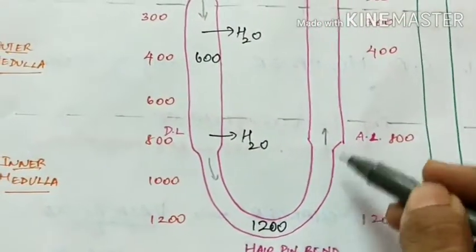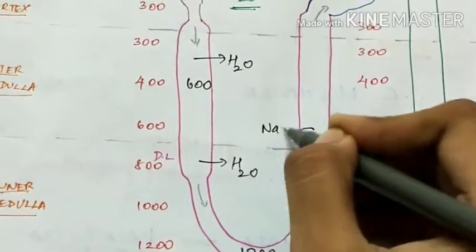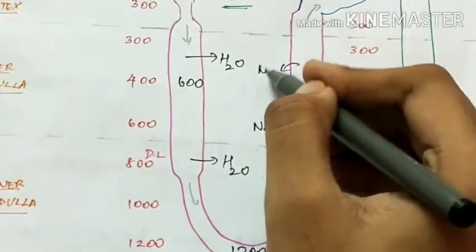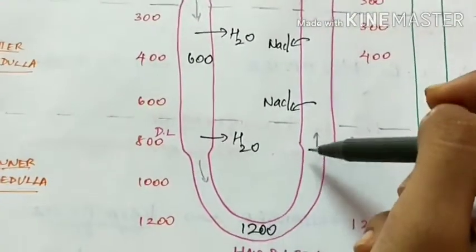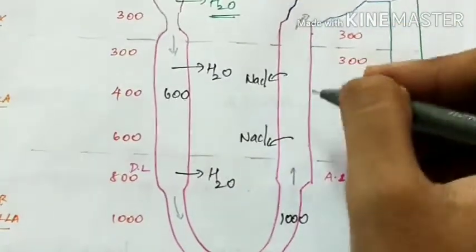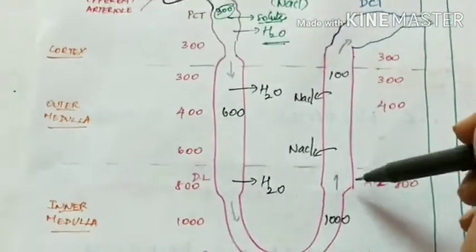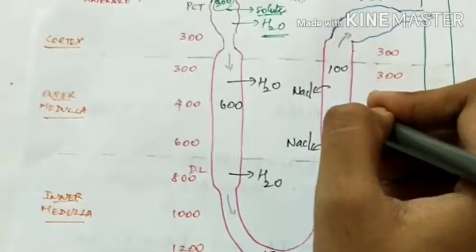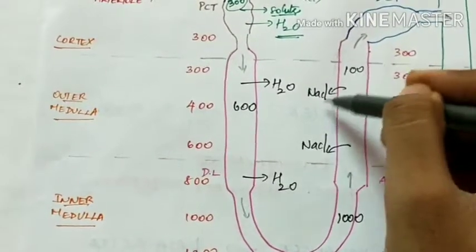In the ascending limb of the loop of Henle, the thick part is permeable only to solutes but impermeable to water. So, due to concentration gradient, the solutes are reabsorbed. The osmolarity keeps on decreasing from 1200 to 1000, and finally to 100 milliosmoles. As the thick ascending limb is impermeable to water, the urine here becomes hypo-osmolar — that is, the osmolarity decreases due to reabsorption of all the solutes.